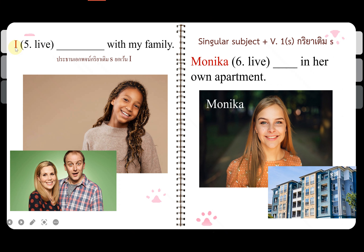'I' is an exception in present simple. With 'I,' you do not add S to the verb — 'I live with my family.' But Monika is singular, so we add S: Monika lives in her own apartment.